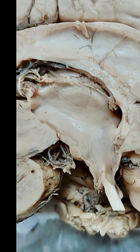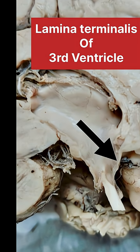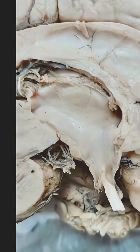In the adult brain, the anterior neuropore is represented by the lamina terminalis of the third ventricle.